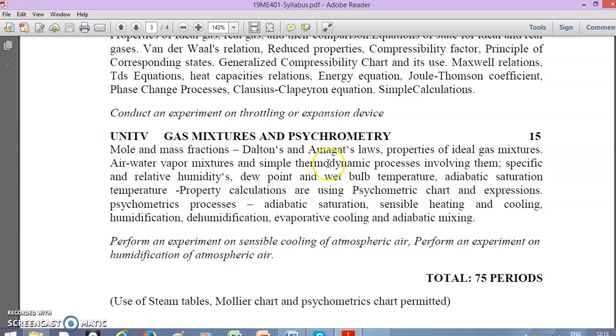Unit 5 is Gas Mixtures and Psychrometry. We can separate this into two parts: one on gas mixtures and another on psychrometry. We'll discuss various principles and laws in gas mixtures and psychrometric problems. An experiment is included here as well.